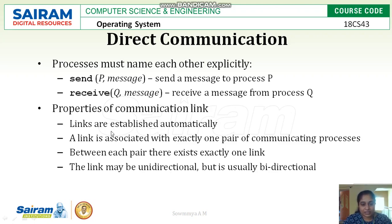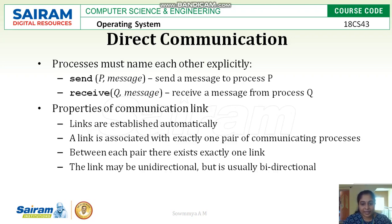The properties of the communication link are: links are established automatically between the sending and receiving processes; a link is associated with exactly one pair of communicating processes; between each pair there exists exactly one link. If we have two processes sending and receiving, there will be only one link established at a time. The link may be unidirectional, but usually communication is bidirectional.